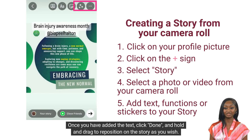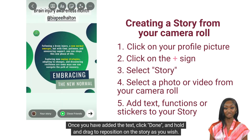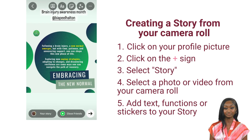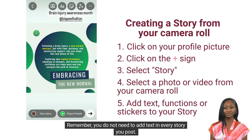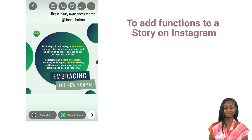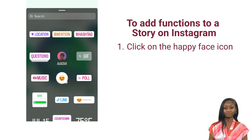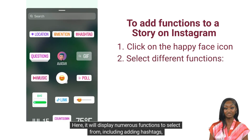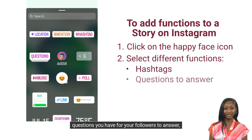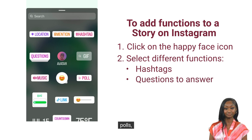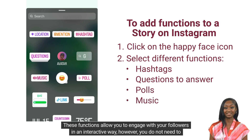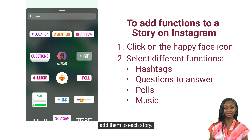Once you have added the text, click done, and hold and drag to reposition on the story as you wish. Remember, you do not need to add text in every story you post. To add other functions, click on the happy face icon at the top. Here, it will display numerous functions to select from, including adding hashtags, questions you have for your followers to answer, polls, and adding music. These functions allow you to engage with your followers in an interactive way, however, you do not need to add them to each story.